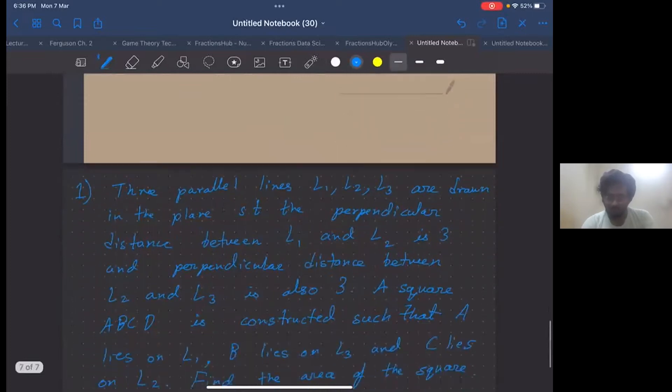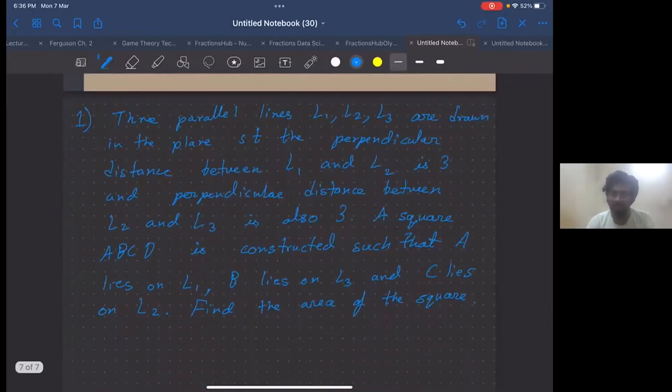Let's look at the question. Three parallel lines L1, L2, L3 are drawn in the plane such that the perpendicular distance between L1 and L2 is 3, and the perpendicular distance between L2 and L3 is also 3. A square ABCD is constructed such that A lies on L1, B lies on L3, and C lies on L2. We have to find the area of the square.